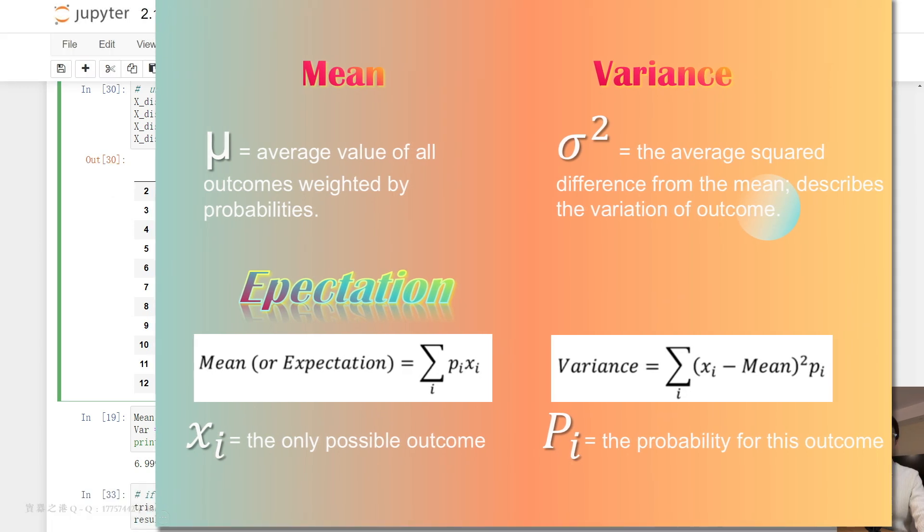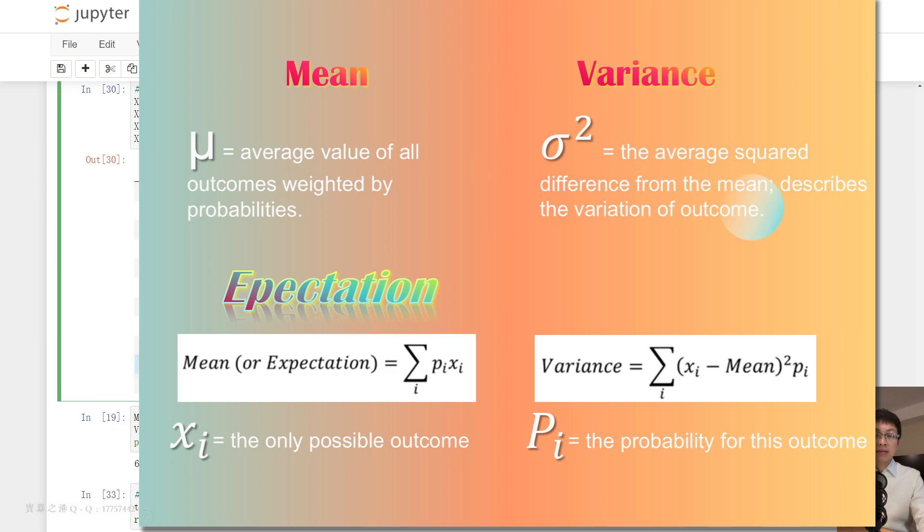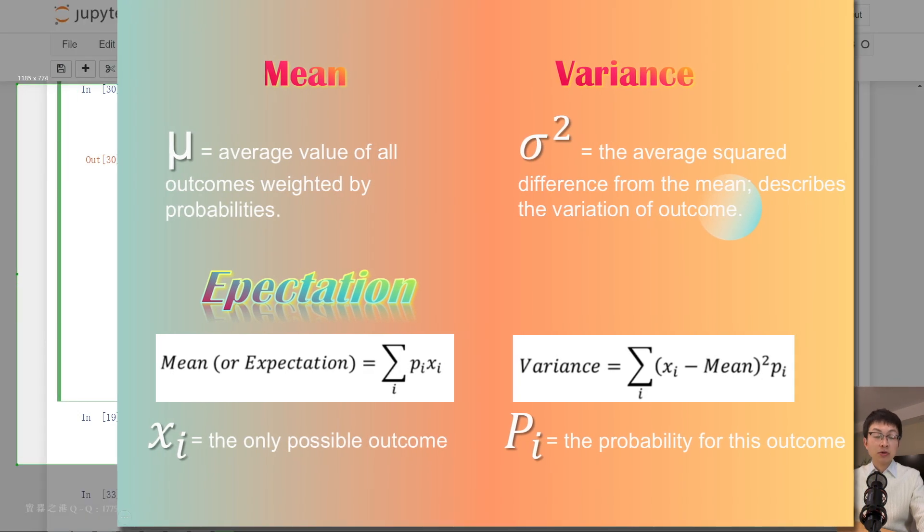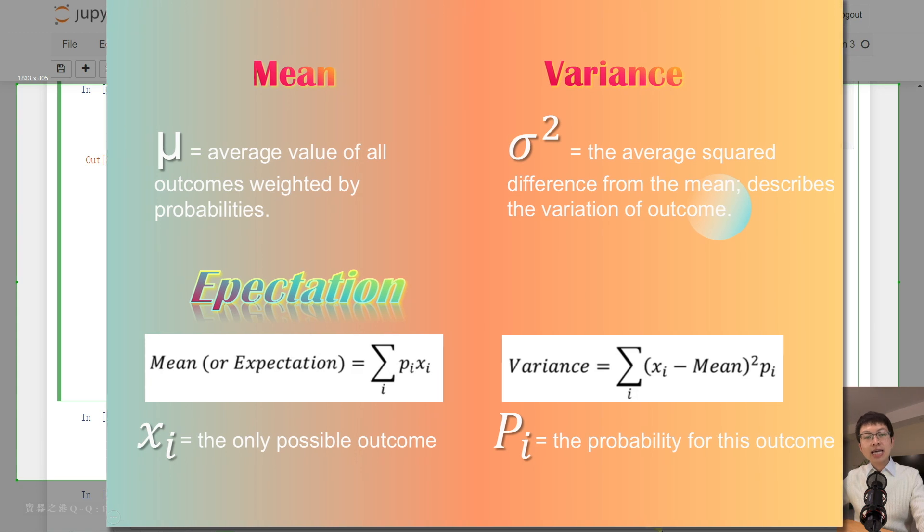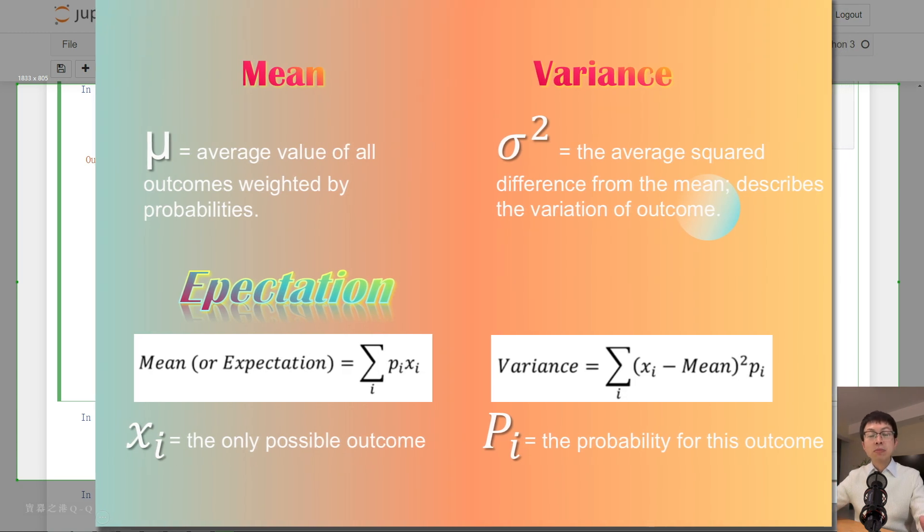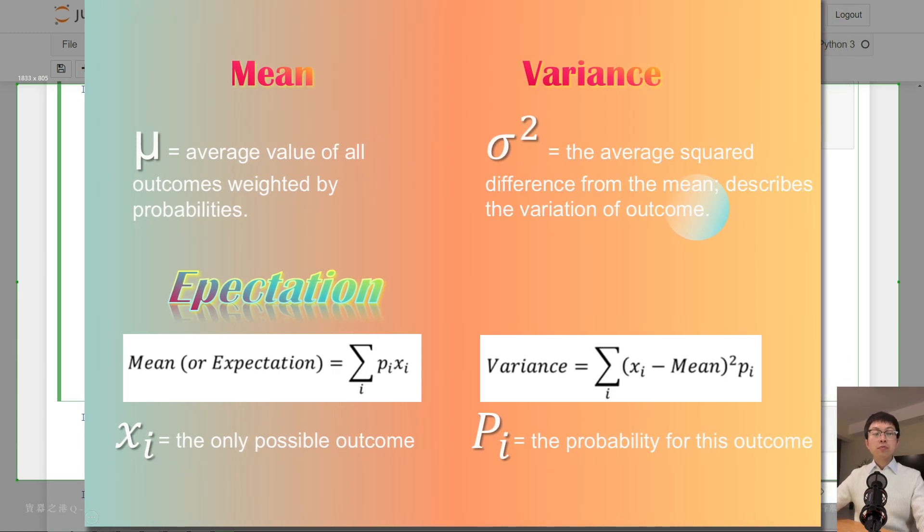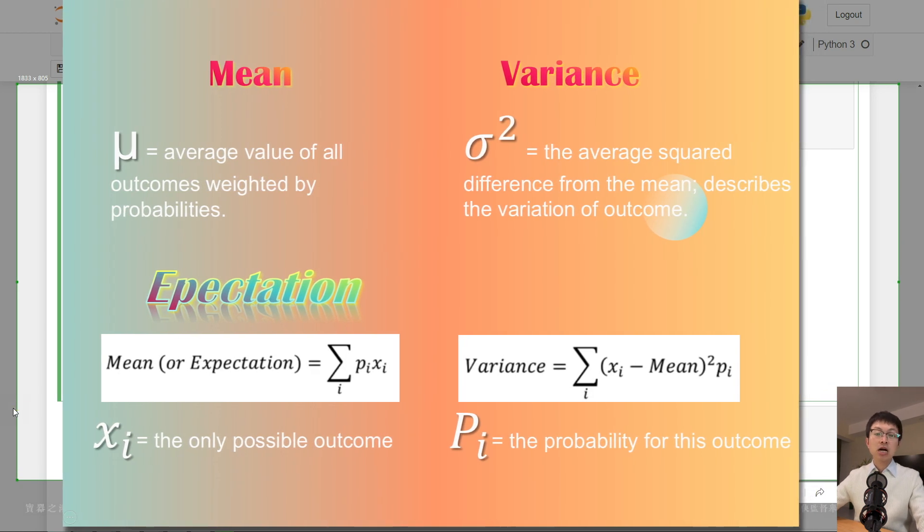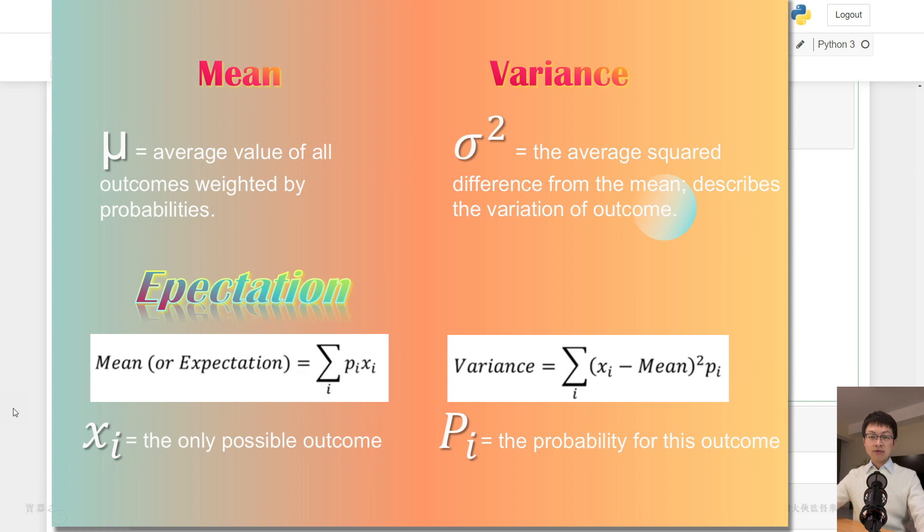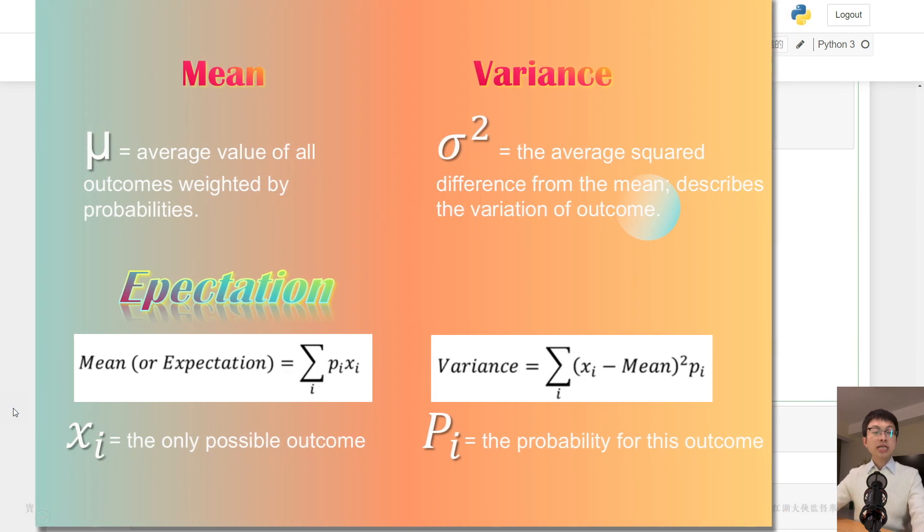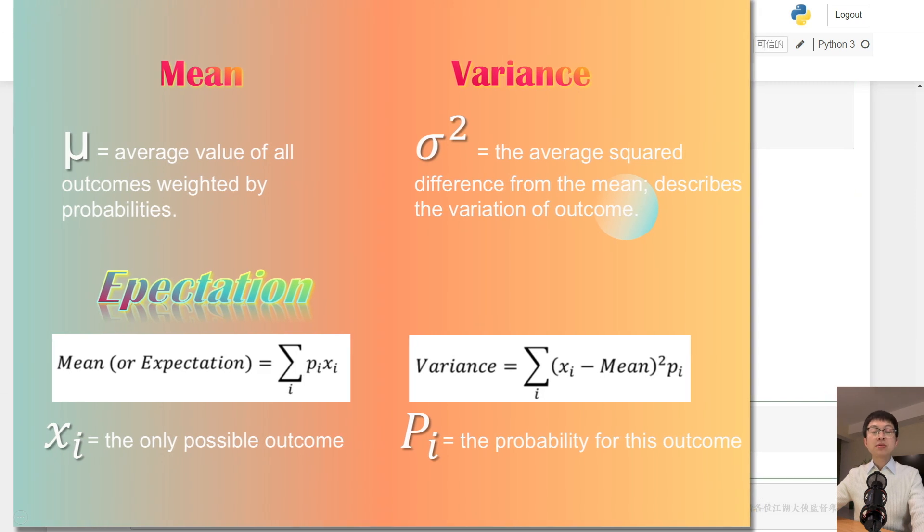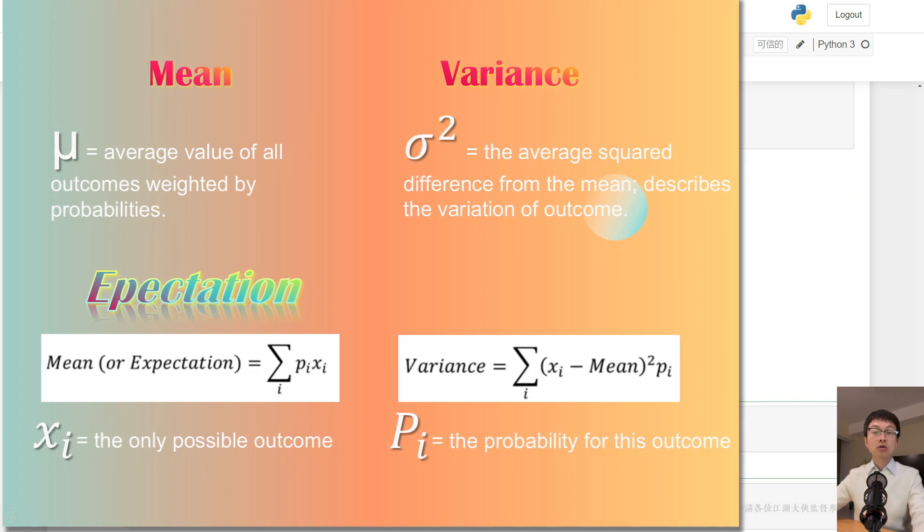Here you can see the general formula for the mean and variance of a discrete random variable. Xi represents the only possible outcome, while pi represents the probability for this outcome. The mean is the average of all outcomes weighted by probabilities. The variance describes the variation of outcome.